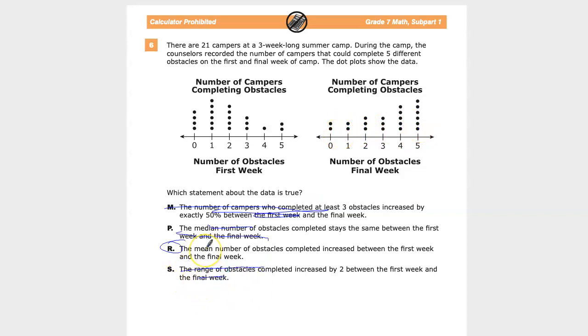So in this case, the mean number of obstacles increased between the first week and the final week. You also notice that it was the least specific. This one said it stays the same, so that indicates a number. This one says it increased by exactly 50%. And then this one says they increased by 2. It's easier to prove some really generic thing, like it got more.